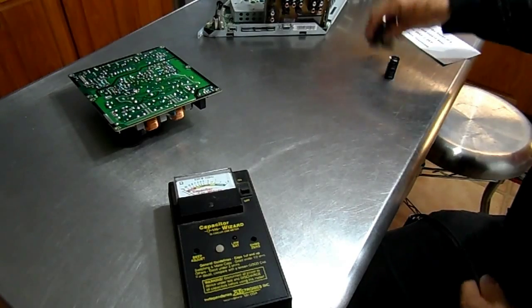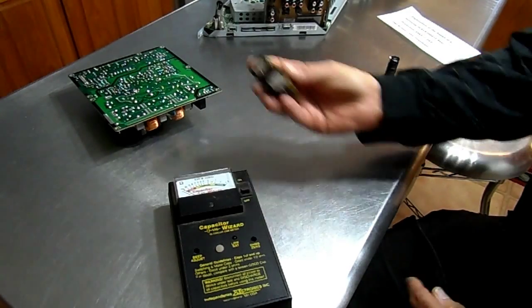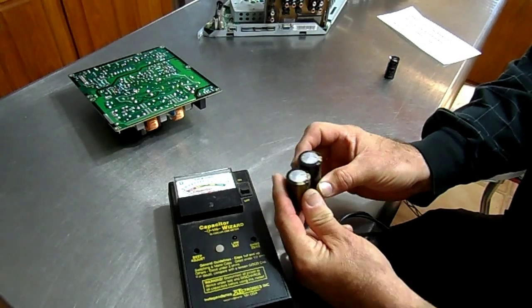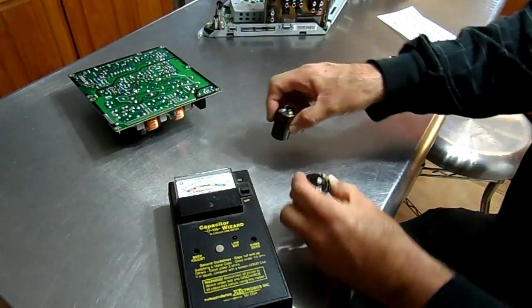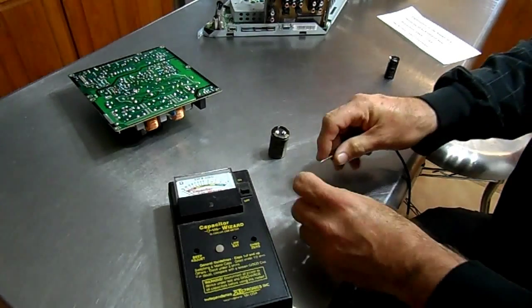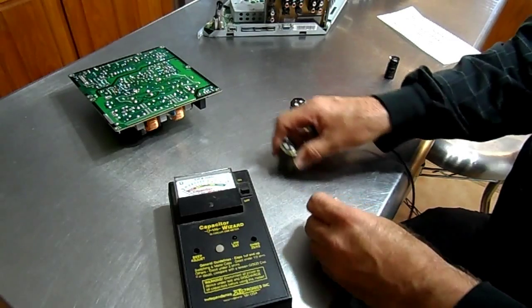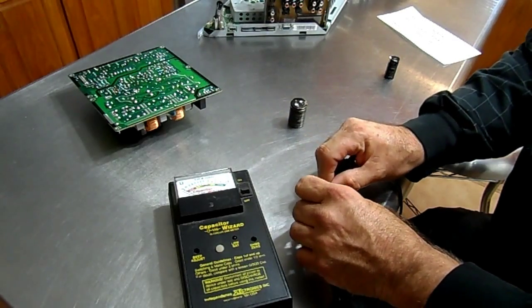If we take a look at the two original capacitors that were in there, you can see that the tops are slightly bulged, just very slightly. It's not obvious that they're bad, but if we take the capacitor tester and try and check them, it doesn't even move the needle on either one. They are absolutely open.